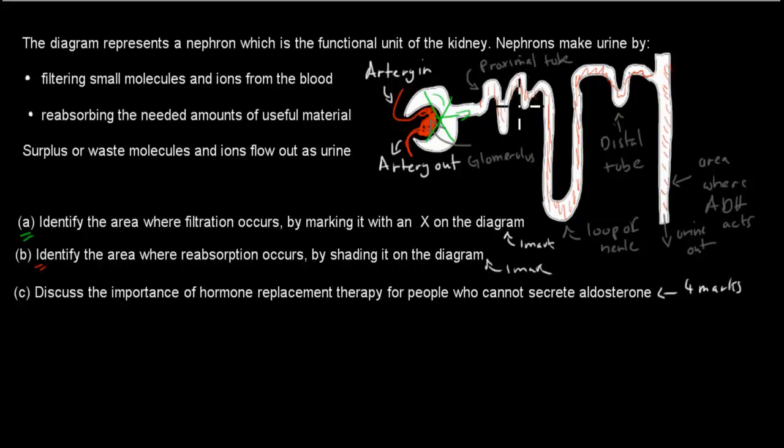And because of aldosterone and ADH, it also occurs in the collecting duct. Here at the proximal tube, we reabsorb glucose, amino acids, and some other salts. Here in the Loop of Henle, we reabsorb water and salts. In the distal tube, we reabsorb the remaining bits of water and salts and some of the other useful bicarbonate ions.